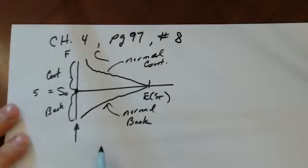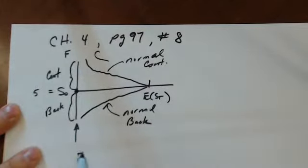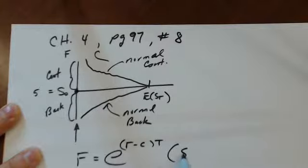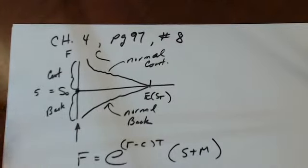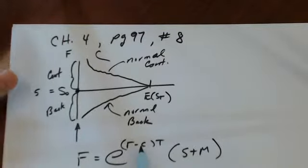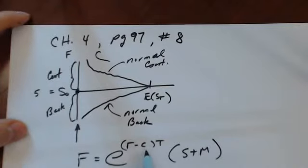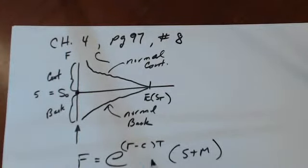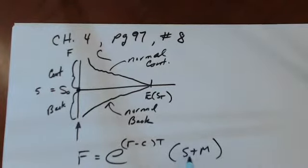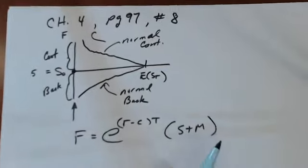So the formula for this would be, and this is the formula that we've been using. So here we're looking at current spot plus the holding costs as of today, and we're growing it forward at rate R minus C, the convenience yield, because the convenience yield reduces your cost of carrying the spot. Remember, this whole side is the cost of carry. Adjust it for the time period that we're looking at.